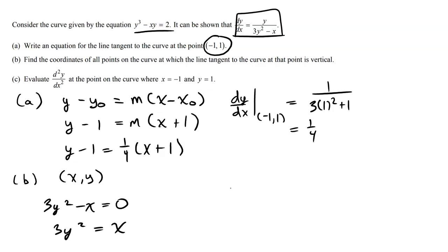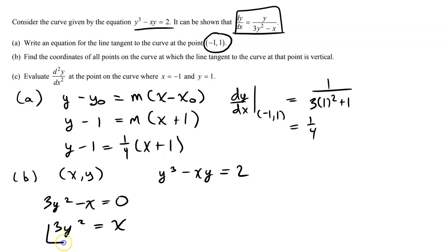Setting the denominator to 0 gives us 3y squared equals x. That doesn't seem like a lot of information on its own. We can't just plug it back into the derivative formula. We're looking for a point — a coordinate — so we have to look at the original implicit equation: y cubed minus xy equals 2. This tells us x and y coordinates. This condition tells us where the curve has an infinite slope.